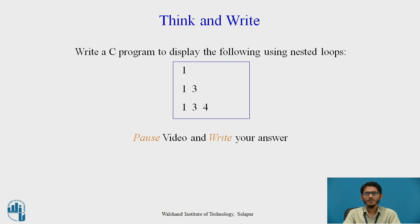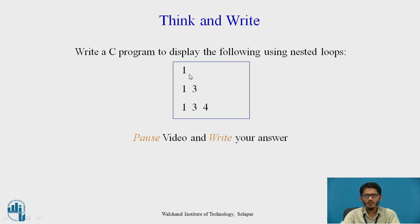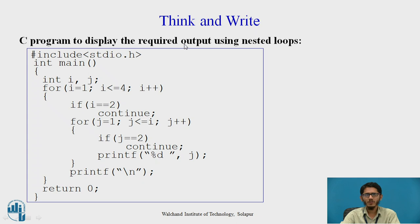Next, students are expected to think and write the answer to the following question: write a C program to display the following output using nested loops. Pause the video and write the answer. To get this output, we first need to understand what it requires. In this output, the first line has the number 1, and in subsequent lines the value 2 is skipped. In order to display this output, we can use the continue statement.